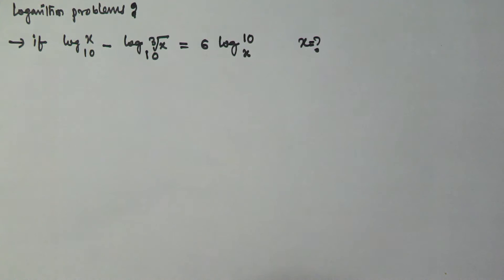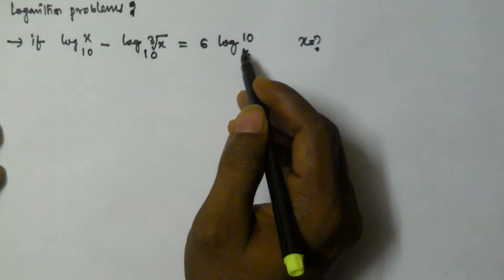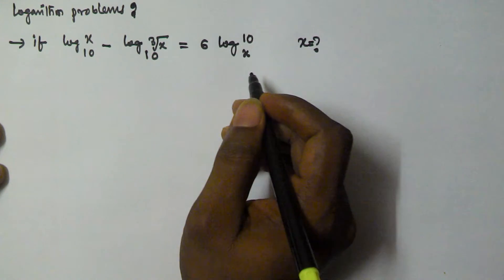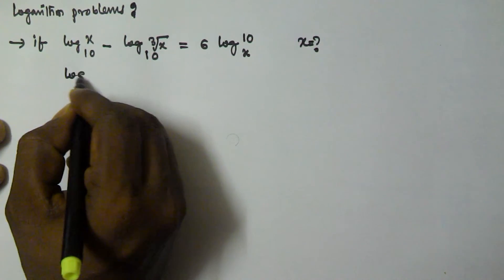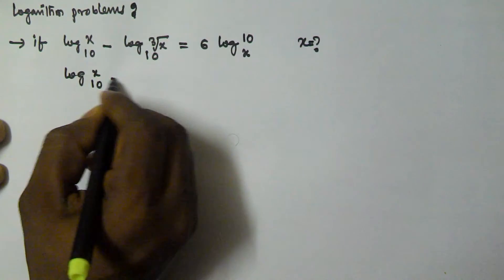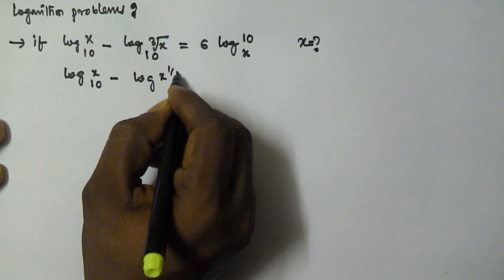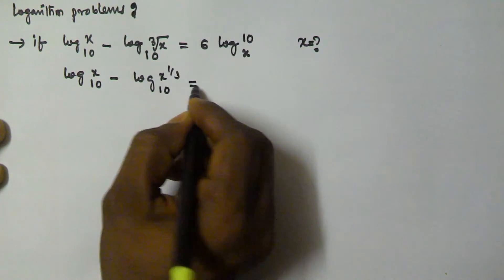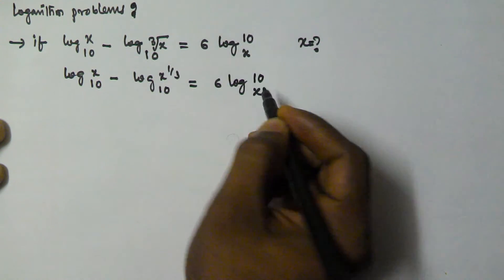So, log x base 10 minus log of the cube root of x base 10 is equal to 6 log 10 base x. This can be written as log x base 10 minus log x to the power of 1 by 3 base 10 is equal to 6 log 10 base x.